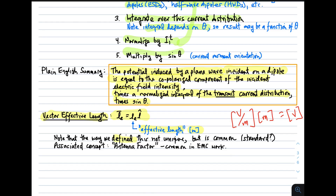The way we defined this is not unique but is common and perhaps standard. There is at least one other way to define vector effective length, which makes the direction of the vector effective length parallel to the axis of the dipole rather than theta-hat, which can be very confusing. There is also an associated concept known as the antenna factor, commonly used in electromagnetic compatibility work, which is usually just the magnitude of the effective length.